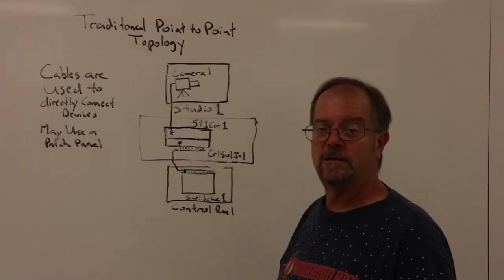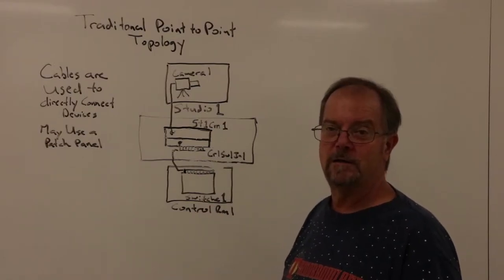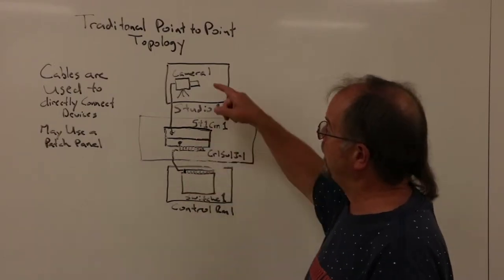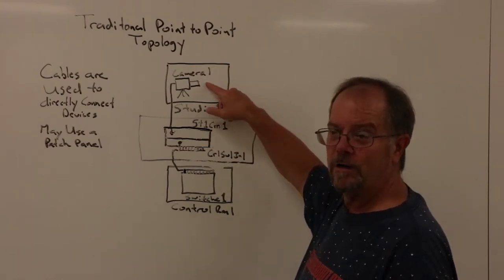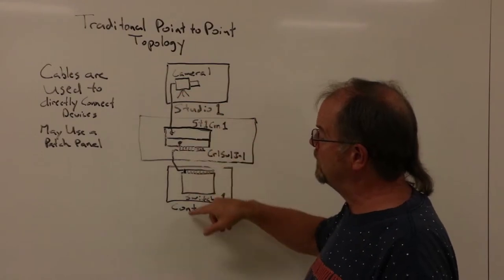In a traditional production studio, they use what is called point-to-point wiring topology. What that means is that if they want to connect a camera in Studio A1 to a switcher in Control Room 1, they run a cable between the two.